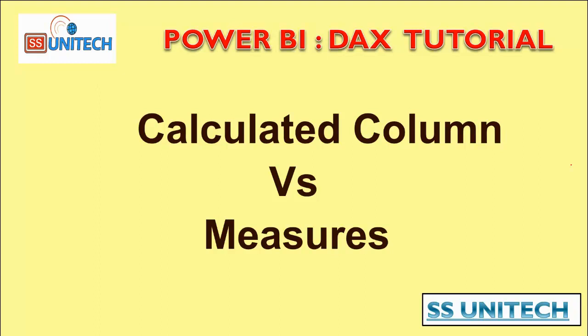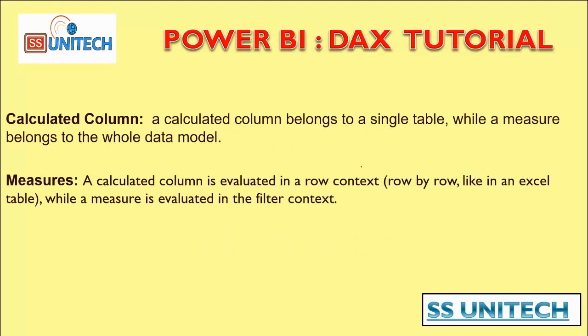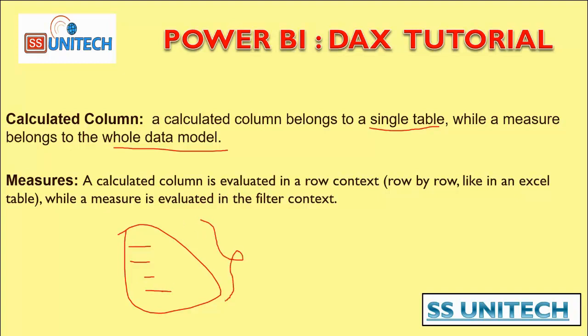So what is a calculated column and a measure? A calculated column belongs to a single table, while a measure belongs to your whole data model. For example, if we have a report with multiple tables and we create a measure, it will be available across all those data models. If we create a calculated column, it will only be available in the single table where we created it. So a calculated column is based on a single table and a measure is based on the whole data model.